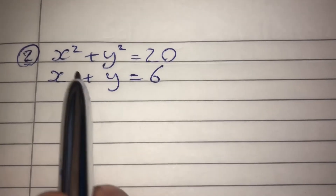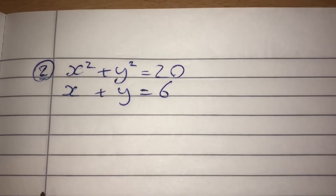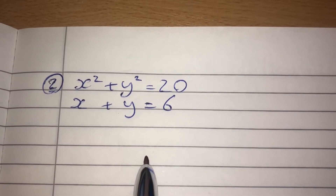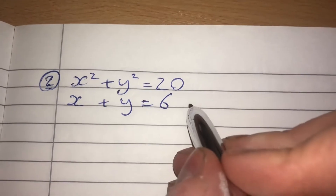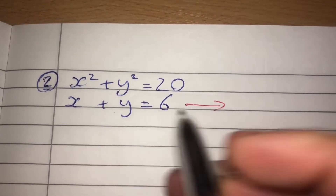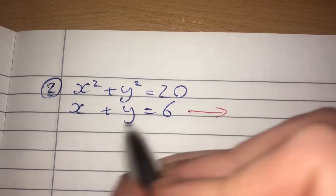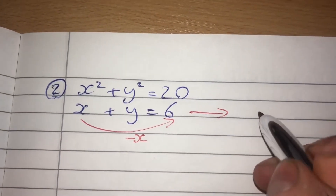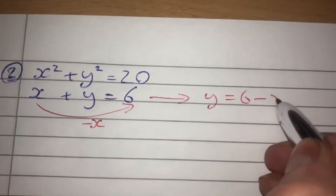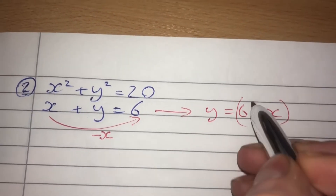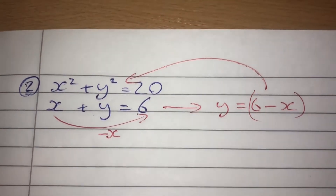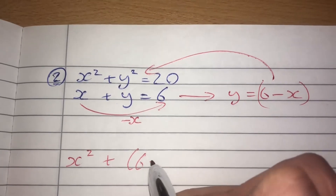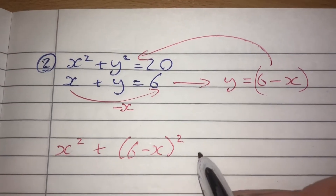Now I'm going to do another example, this time with one equation being a quadratic. I have to use substitution here because I can't subtract one equation from the other to eliminate x or y. I'll take the second equation and make y the subject. I subtract x and move it to the right hand side, giving y equals 6 minus x. This expression, 6 minus x, will be substituted into the first equation in place of y.